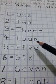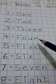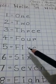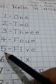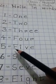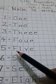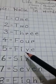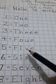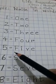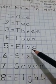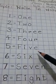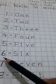Here is four. At first I will write F, then I will write O, then I will write U, then I will write R. F-O-U-R, four. Here is five. At first I will write S, then I will write I, then I will write F, then I will write E. Five.